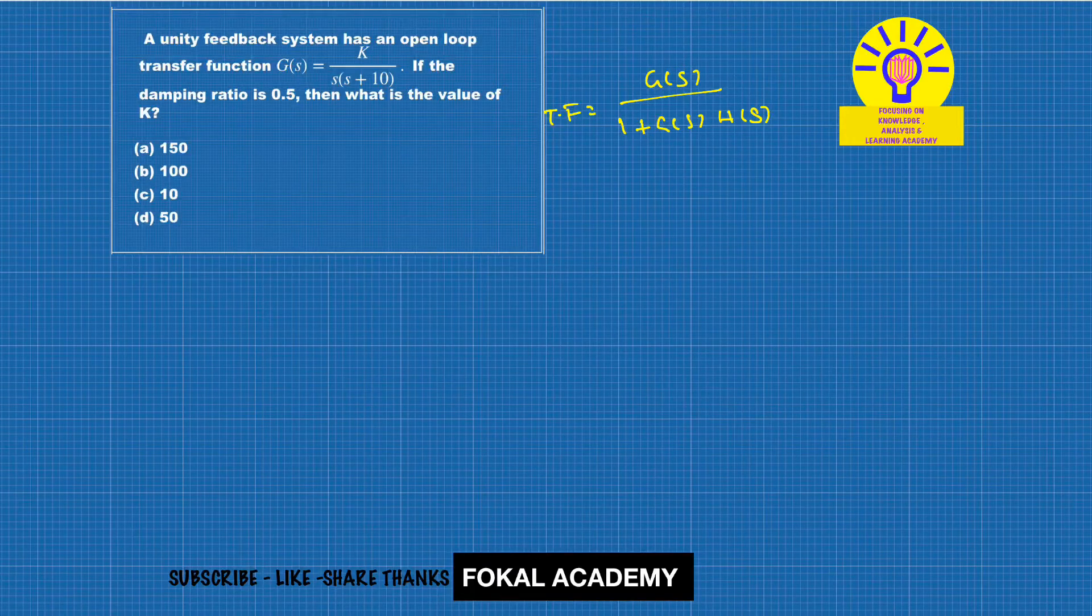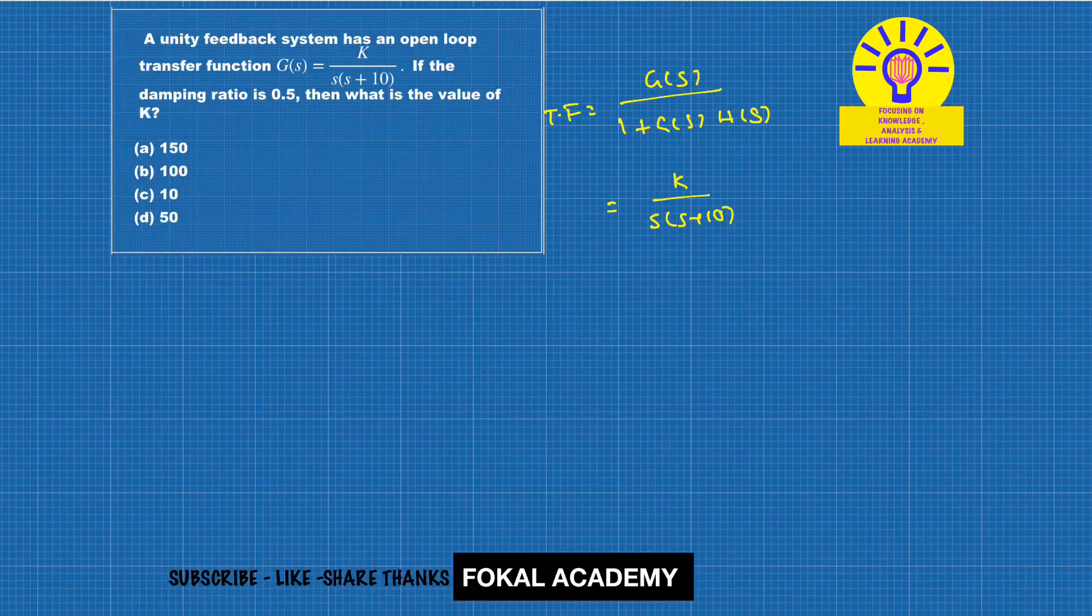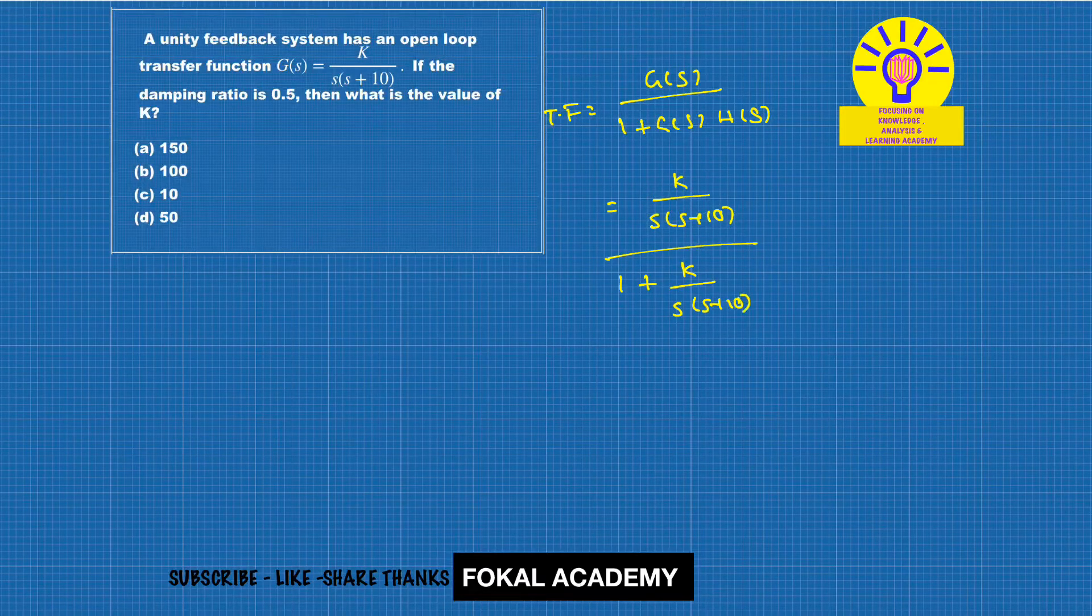So k/(s(s+10)) divided by 1 plus k/(s(s+10)). Here it's given as a unit feedback system, so H(s) is equal to 1.